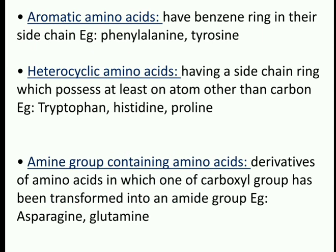Aromatic amino acids contain a benzene ring in their side chain — examples are phenylalanine and tyrosine. Heterocyclic amino acids have a side chain ring which possesses at least one atom other than carbon — examples of heterocyclic amino acids are tryptophan, histidine, and proline.